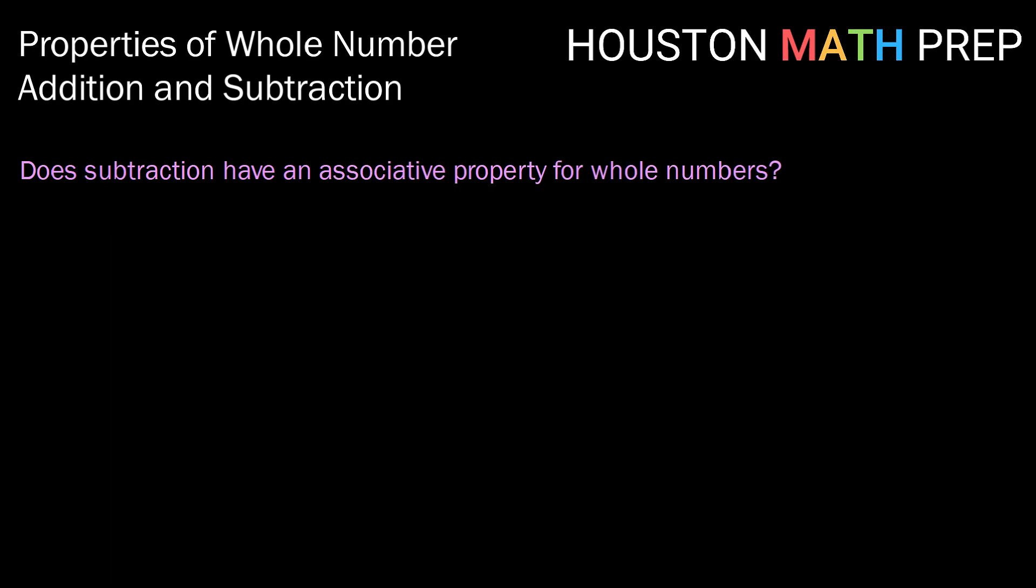What about the associative property for whole numbers? Can we regroup in subtraction on whole numbers and get the same answer? Well, let's take three values, 1, 3, and 5. Can we show that the left and the right are the same? So if we first group 5 minus 3, 5 minus 3 gives us 2. Then, 2 minus 1 is 1. Let's check the other side. If we first group the 3 and the 1, 3 minus 1 is 2. Then, 5 minus 2 is 3.